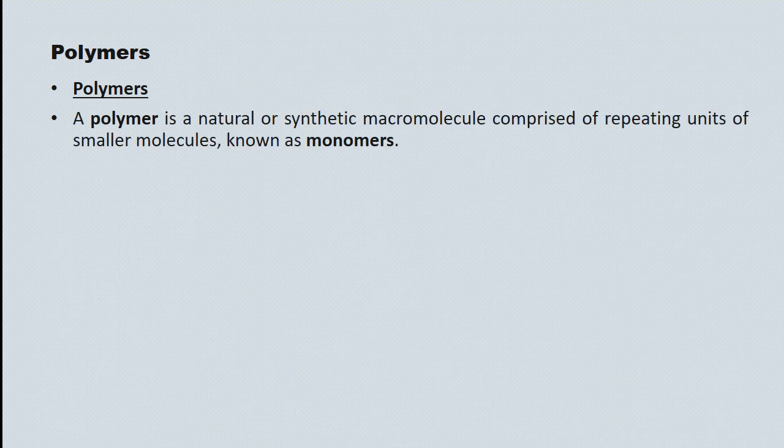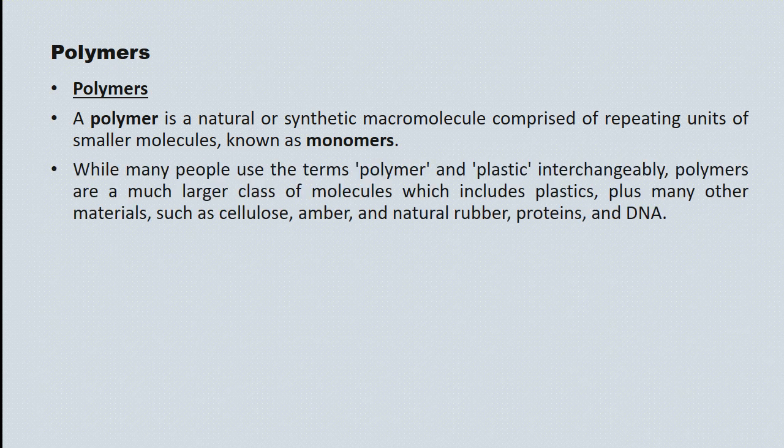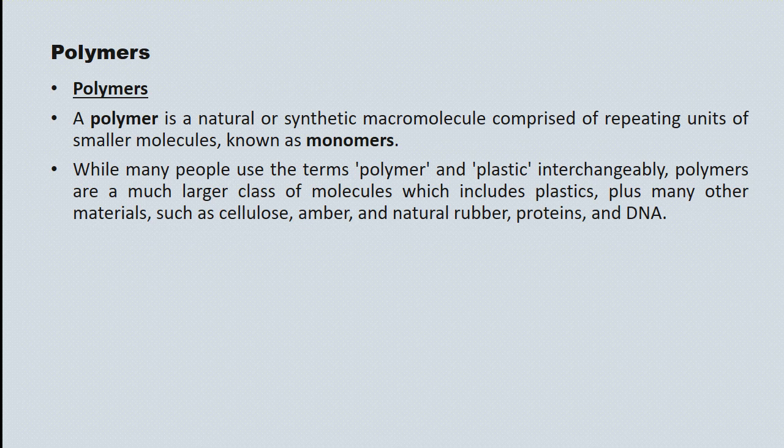Polymers are macromolecules. They can either be naturally occurring or synthetically made. They're comprised of repeated subunits of smaller molecules we call monomers. Many people use the expression polymer and plastic interchangeably. And indeed, plastics are polymers. However, polymers are a very much larger class of molecule. They include plastics, but they also include things like natural rubber, proteins, and DNA.